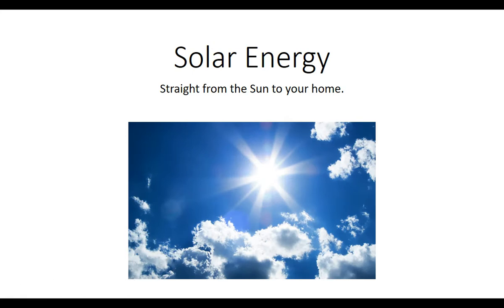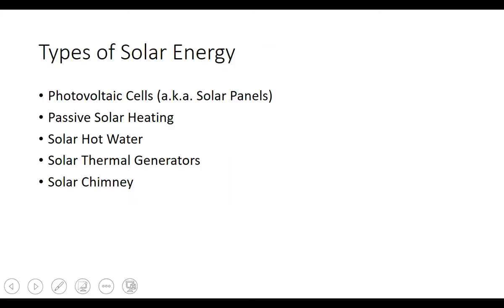Moving on to solar. In theory it's one of the best sources since almost all our energy traces back to the sun — this just gets it more directly. There are many different ways to get solar energy. You're probably most familiar with photovoltaic cells, or PV cells, or solar panels — they're all the same thing. There's also passive solar heating, solar hot water heaters, solar thermal generators, and solar chimneys.